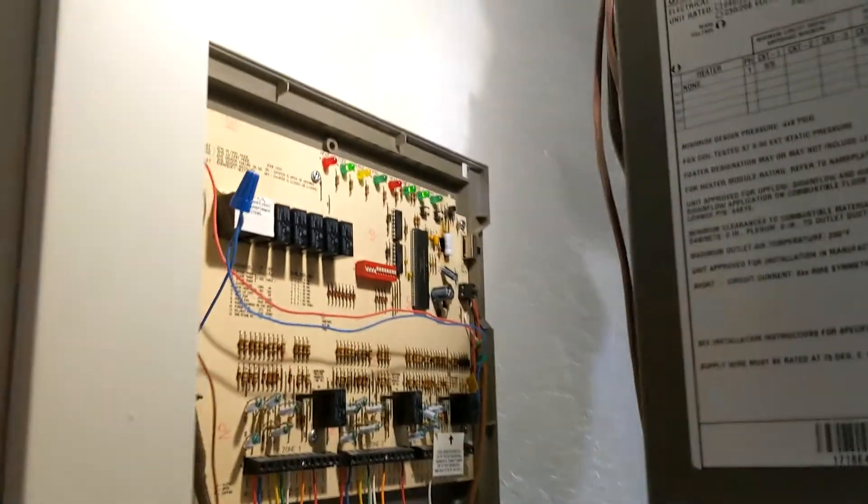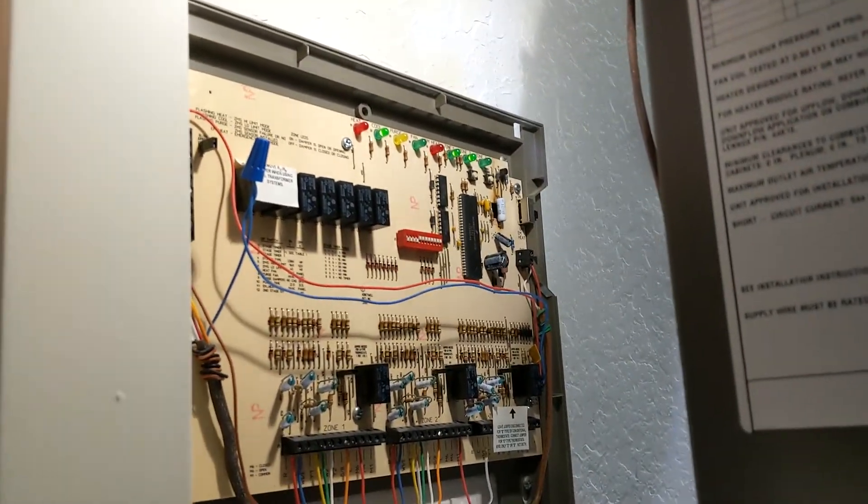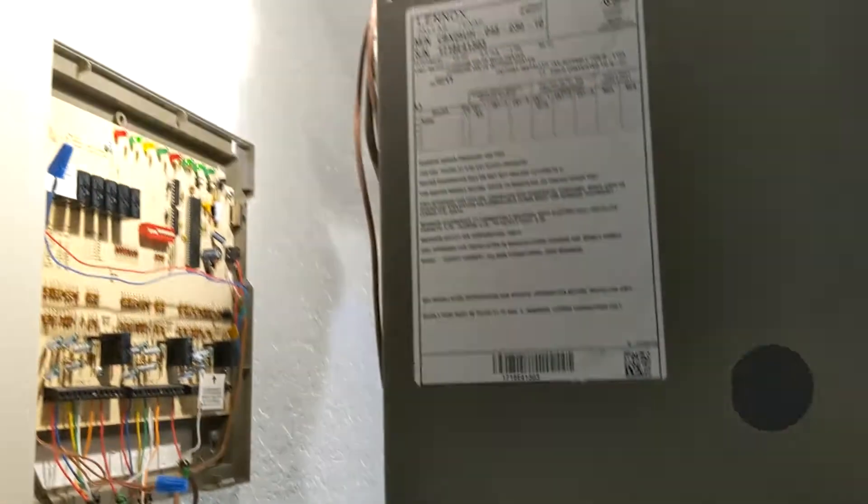I just had this issue where zone one would work fine with the thermostat, but zone two, as soon as that thermostat kicked on, would kick on the AC unit and that would be operating just fine.